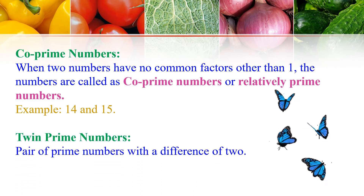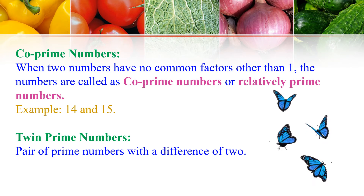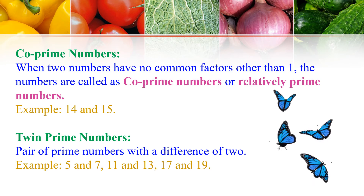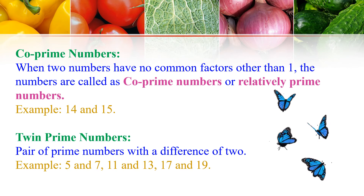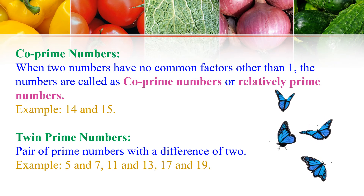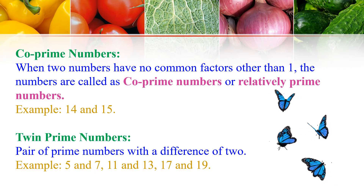Twin Prime Numbers: A pair of Prime Numbers with a difference of 2 is called Twin Prime Numbers. For example, 5 and 7 — 5 is a Prime Number and 7 is also a Prime Number, and the difference between them is 2. Similarly, 11 and 13 are Twin Prime Numbers with a difference of 2. Likewise, 17 and 19 are both Prime Numbers, so 17 and 19 are called Twin Prime Numbers.